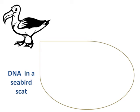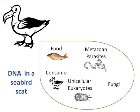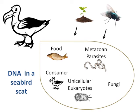Vertebrate scats contain the food DNA you are targeting, but also DNA from the consumer, parasites, and unicellular organisms found in the gut. External contamination may come from the vegetation or the dirt the sample landed on, and insects may feed or lay eggs on the sample. There is also potentially handling contamination from us humans.